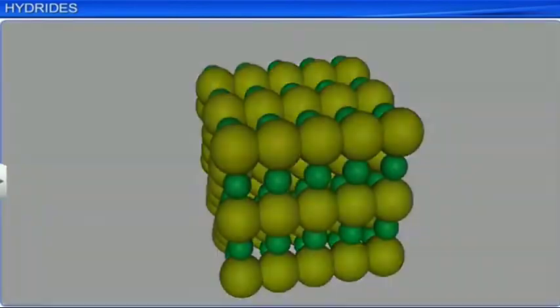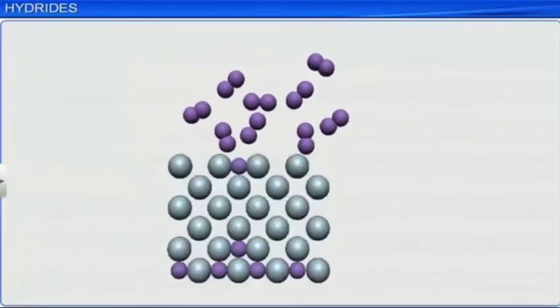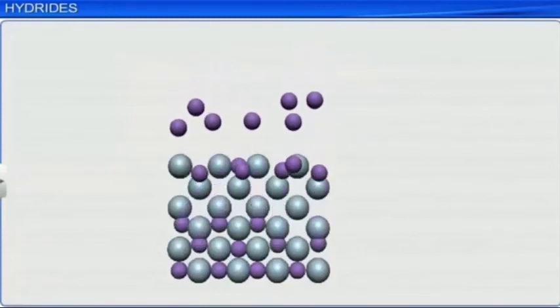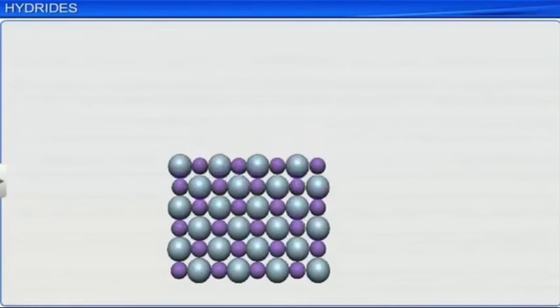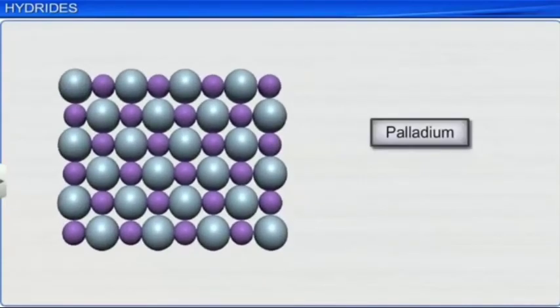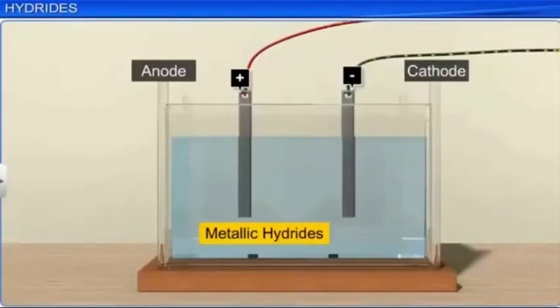The property of absorption of hydrogen on transition metals is widely used in catalytic reduction and hydrogenation reaction in the preparation of a large number of compounds. Metals like palladium and platinum can accommodate a very large volume of hydrogen and can be used as media for its storage. Metallic hydrides are good conductors of heat and electricity and are harder than the parent metal.